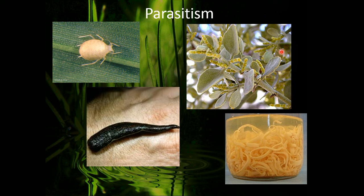Parasitism comes in two different forms. It can be internal, like a tapeworm, or external, like a leech, aphid, or mistletoe. Each of these organisms is damaging the organism it's on — taking away blood, phloem, sugars, or food from the host organism — so it's harming the host while the parasite benefits.